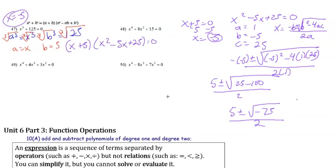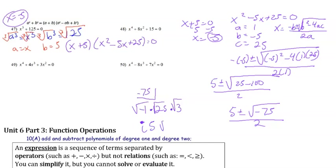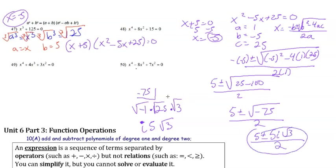To simplify √(−75), we pull out −1 and 25: since 25×3 = 75, we get √(−75) = √(−1)·√25·√3 = 5i√3. So the two remaining solutions are x = (5 ± 5i√3) / 2.